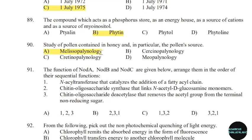91st question: The functions of node A, node B, and node C are given below. Arrange them in the order of their sequential functions. Correct answer: Option C — 1, 3, 2.